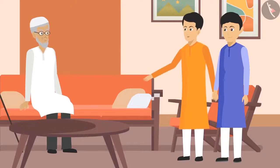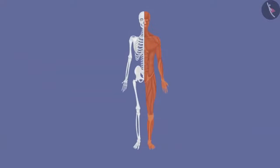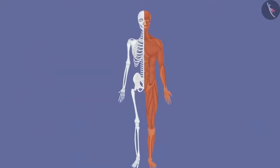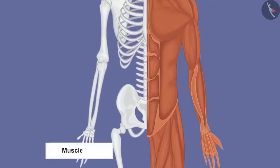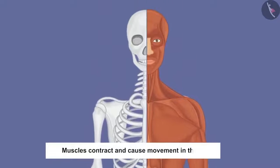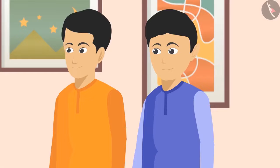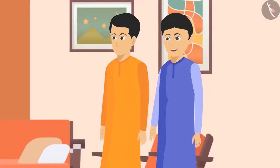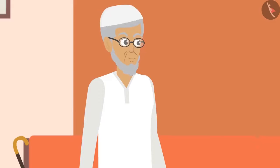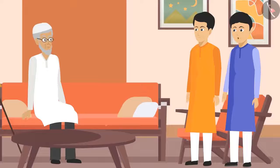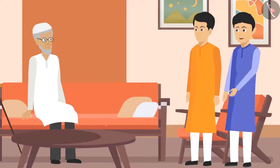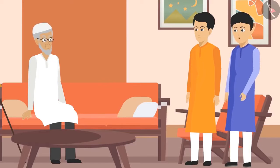Chacha then asked how body parts move. The kids explained that body parts use muscles for movement, and most muscles are attached to bones. These muscles contract and cause movement in the bones. Since muscles can only pull bones by contracting and cannot push them, at least two muscles are needed to cause movement in a bone.